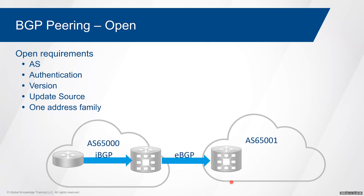If no common address family is found, the relationship will flap — repeatedly attempting the TCP three-way handshake, sending open messages, failing to find a common address family, dropping back down, and trying again. iOS and iOS XE assume IPv4 unicast; XR assumes nothing. Everything else — additional address families and other capabilities — are considered optional. As long as at least one address family is in common, the relationship comes up. Any additional optional capabilities that don't match simply won't be used.